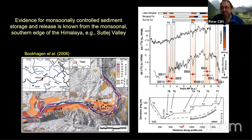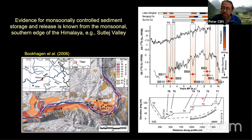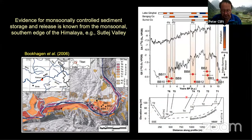Transport of sediment from source to sink is not entirely simple. Work by Bode Bookhagen in the Sutlej River valley, using cosmogenic and OSL dating, showed that the Sutlej valley was filling up with sediment during times of strong monsoon when sediment load was high, then becomes incised when the monsoon gets weaker. This produces a flight of terraces, but importantly, the valleys may store significant amounts of sediment during wet times and that sediment gets reactivated and removed in dry times, potentially spanning thousands of years.